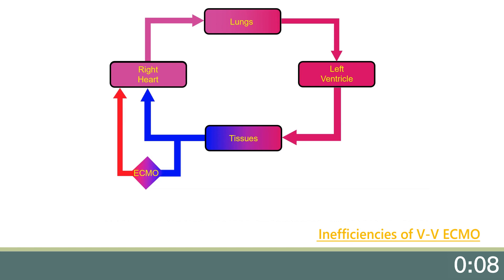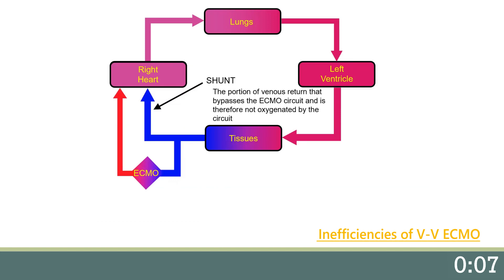There are, however, some inefficiencies of V-V ECMO support that are of significant consequence to the patient. The first inefficiency is a V-V ECMO shunt, which is the portion of venous return to the right ventricle that bypasses the ECMO circuit entirely and is therefore not oxygenated by the ECMO circuit. For example, if a patient has an ECMO circuit flow of only 3 liters per minute but a cardiac output of 6 liters per minute, the ECMO flow to cardiac output ratio reveals that only half of that patient's blood is being oxygenated by the ECMO circuit. The lower the ECMO flow to cardiac output ratio, the lower the saturation in the patient's right heart and presumably in the systemic arterial blood as well, depending on how much gas exchange is provided by the lungs.